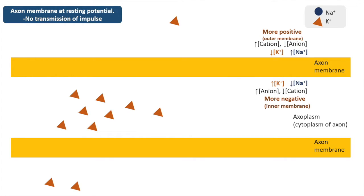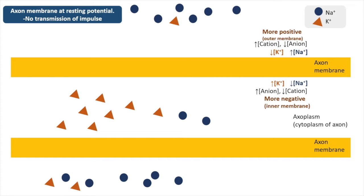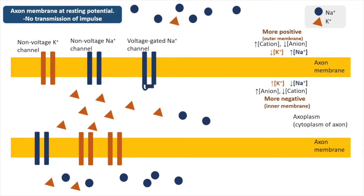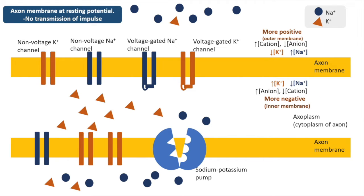The outside of the axon is more positive due to the cations that are more concentrated outside of the axon and more sodium ions at the outer membrane. Sodium ions and potassium ions are transported across the membrane through non-voltage-gated channels and voltage-gated channels. Non-voltage-gated channels consist of sodium channels, potassium channels, and the sodium-potassium pump. Voltage-gated channels consist of voltage-gated sodium ion channels and voltage-gated potassium ion channels.